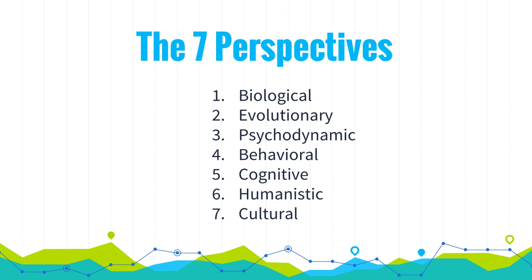Sixth is the humanistic perspective, which studies how our needs for love and acceptance allow us to achieve self-fulfillment — kissing is a manifestation of our affection for another person. Finally, the social-cultural perspective studies how behavior and thinking vary across situations and cultures. For example, in France the custom is to kiss someone in greeting, illustrating how culture shapes that behavior.